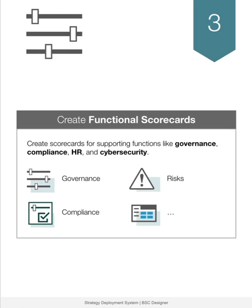Step 3: Create supporting scorecards. Any organization aims to follow the best practices in corporate governance, compliance, and risk management. Focus areas such as cybersecurity, HR, and quality are also critical for effective strategy execution. Formulate these functions in separate supporting or functional scorecards. Additionally, such scorecards are used to capture the results of various strategic analyses, manage scenarios, track evaluations, and organize the library of compliance controls. On our platform, you will find various templates and examples of functional scorecards.